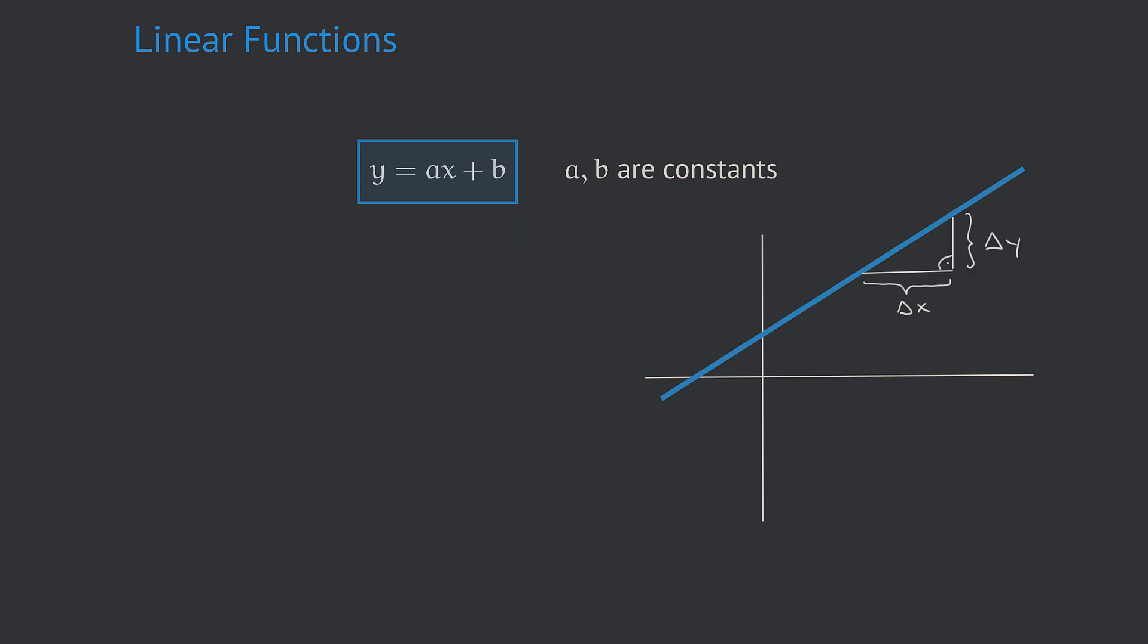If I draw a rectangular triangle to the line like this, where I call the lower horizontal segment delta x and the vertical segment delta y, the constant a can be recovered as the quotient of delta y divided by delta x.